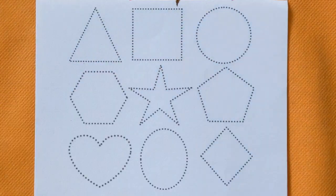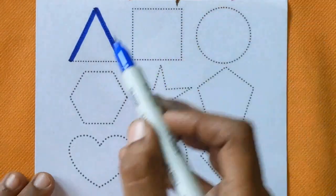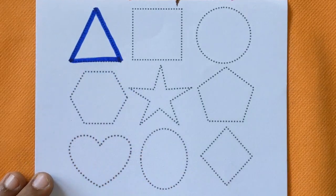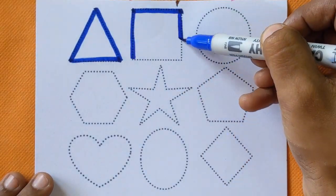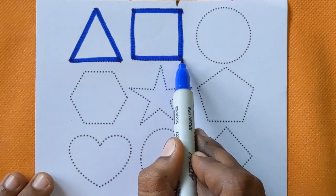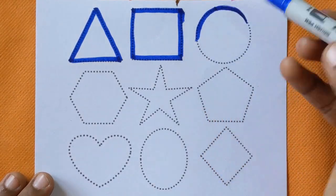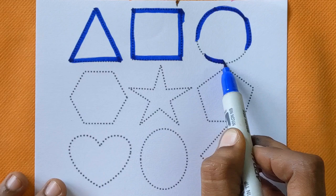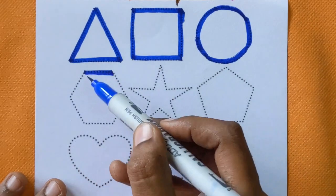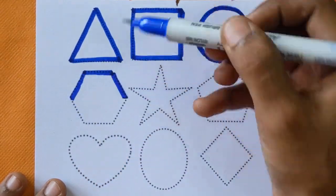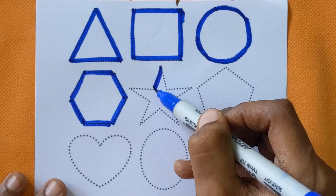Let's get started. Triangle. This is square shape. Circle. Hexagon. Star shape.